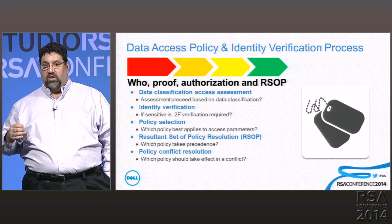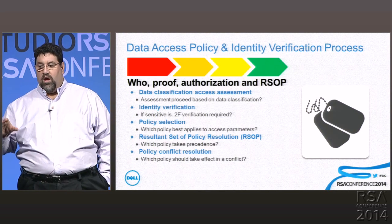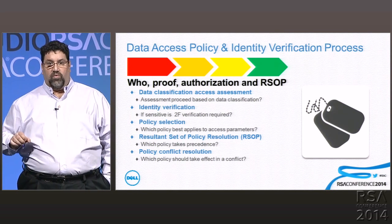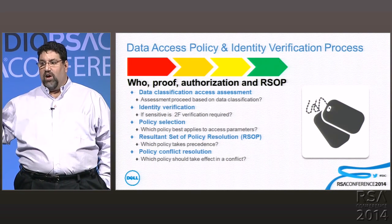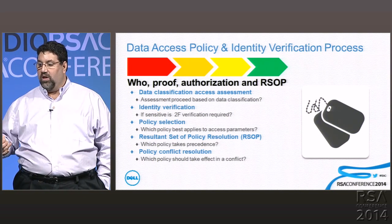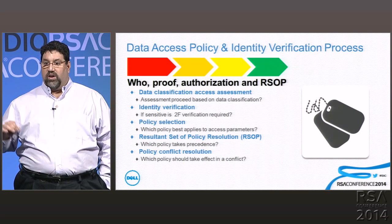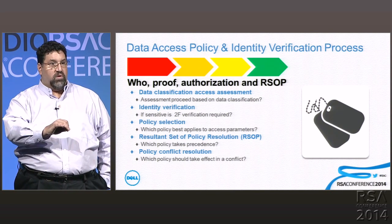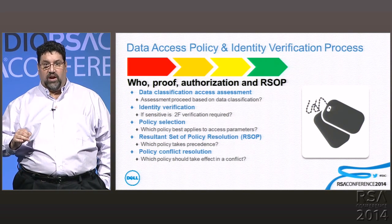The next stage takes a deeper look. Now that we have the basic heuristics of who, what, where, and how, we look at data classification: what is the level of risk this data itself represents? If it's sensitive data and I'm off the corporate network, not on a managed device or managed container, I can take the next step and re-verify identity. Because anyone can lose a username and password. If it's sensitive data in a risky situation, let's get a second factor involved — no matter where the data is — and allow a second factor of verification.